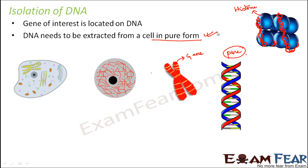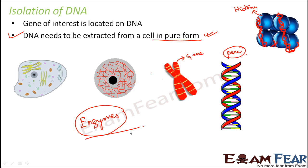Now the question is: if DNA has to be extracted from a cell in pure form, how do we do that? Since DNA is very closely present along with RNA and histone proteins, how do we extract it separately? Also, to bring it out of the cell, you need something that can break or overcome the cell wall and bring just the DNA out. Enzymes are needed for this purpose — enzymes play a very important role in isolating DNA in its pure form.